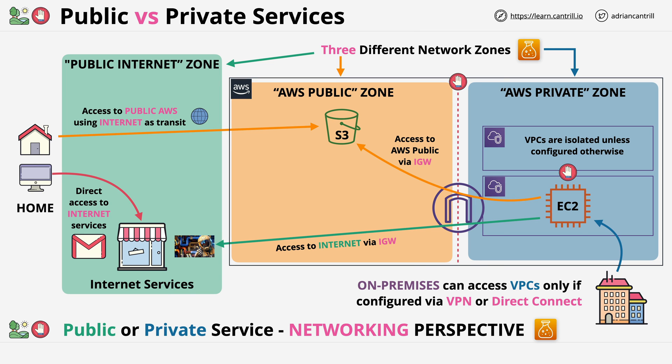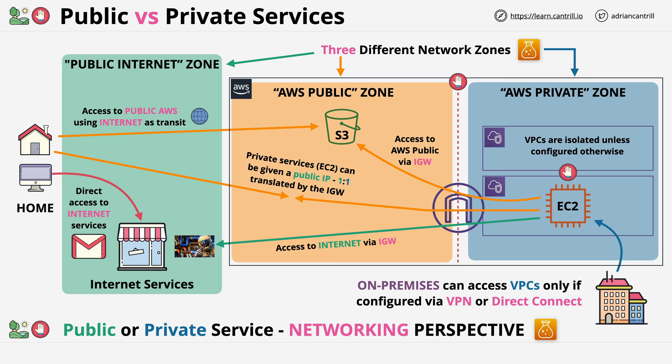It's possible to give private resources such as EC2 instances a public IP address, and this allows the resource to be accessed from the public internet. Architecturally, what this is doing is projecting the EC2 instance into the public zone so that all or part of that instance can be communicated with from the public internet. This is the architecture — the three different network zones you need to be aware of: the public internet, the AWS public zone, and the AWS private zone. As you learn ever more advanced networking features of AWS, these three network zones become really critical to understand.